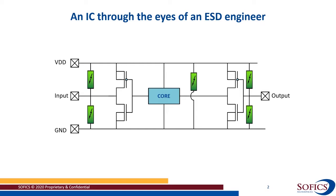You have some inputs, some outputs — in this case represented by an inverter stage — a VDD line, a ground line, and in between all these things some circuitry which we simplified as a core. In many applications, if not all, there are multiple VDD lines, multiple ground lines, and certainly more inputs and outputs than schematically represented here.